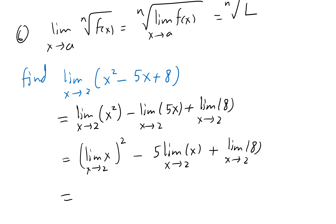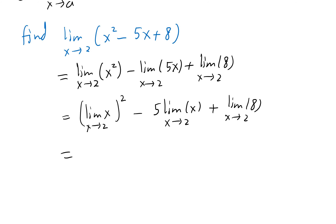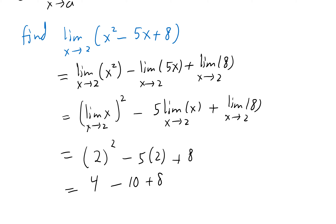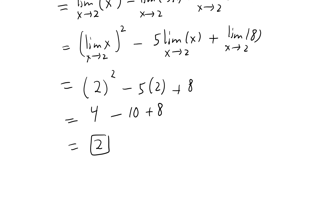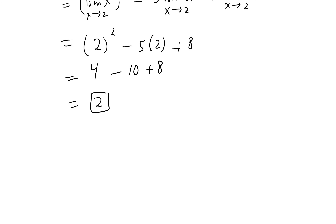Now it's ready for us to do the limit — it's like substituting 2 in. You get 2² minus 5 times 2 plus 8, which is 4 minus 10 plus 8, giving us 2. All these steps must be shown to get credit.